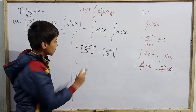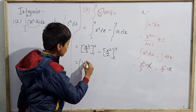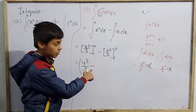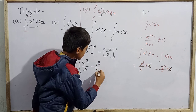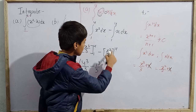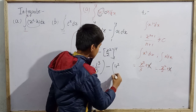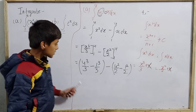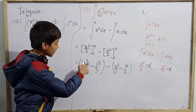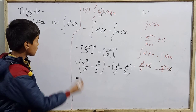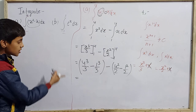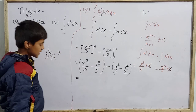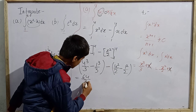Calculating: 4³ = 4 × 4 × 4. First 4 × 4 = 16, then 16 × 4 = 64. So the first term becomes 64/3 minus 1³/3. Note that 1 cubed is always 1, and in general 1^n = 1 for any non-zero n.